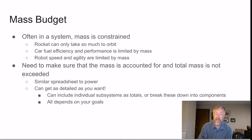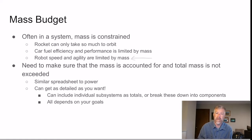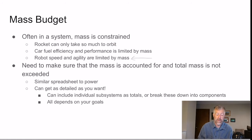Car fuel efficiency and performance is limited by mass — you can't have a Porsche that weighs 10,000 kilograms because it won't perform, so you want to make cars as light as possible to increase fuel efficiency. Robots' speed and agility are also limited by mass, so you tend to want to make robots lighter as well. You need to make sure all mass is accounted for and the total mass budget is not exceeded.